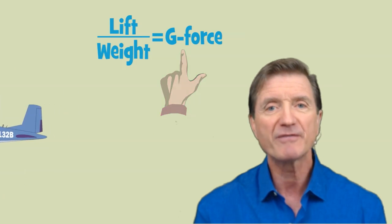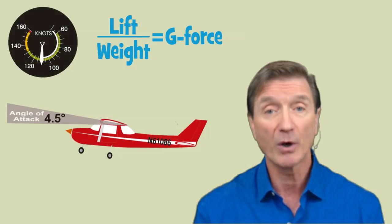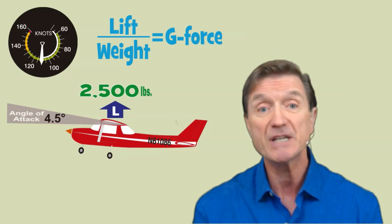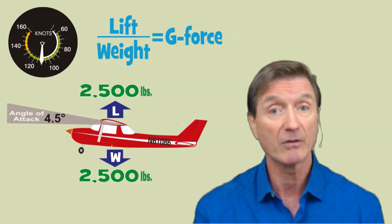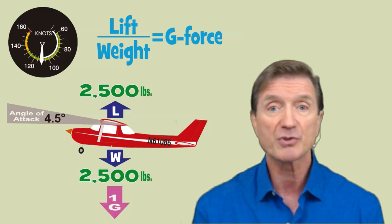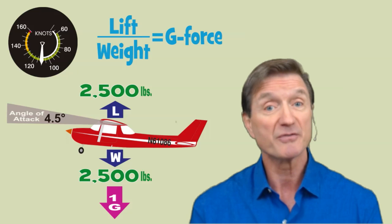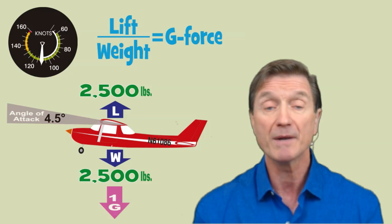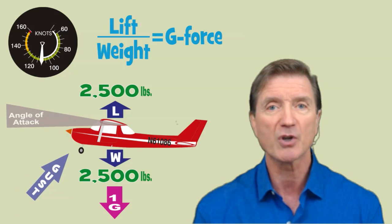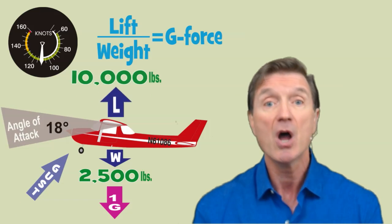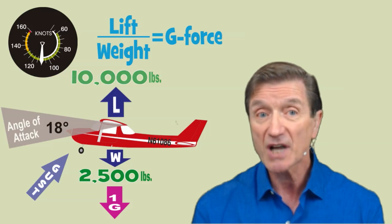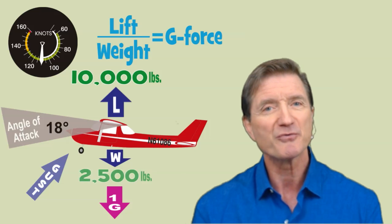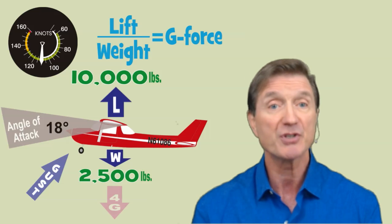If it takes a 4.5 degree angle of attack at 110 knots to produce 2,500 pounds of lift sufficient to keep our 2,500 pound airplane in level flight, we feel a g-force of 1 — 2,500 pounds up and 2,500 pounds down equals a g-force of 1. Now, if turbulence suddenly quadruples our angle of attack to 18 degrees, our wings will suddenly produce four times as much lift, or 10,000 pounds of lift. With a weight of 2,500 pounds, we'll experience a g-force of 4.